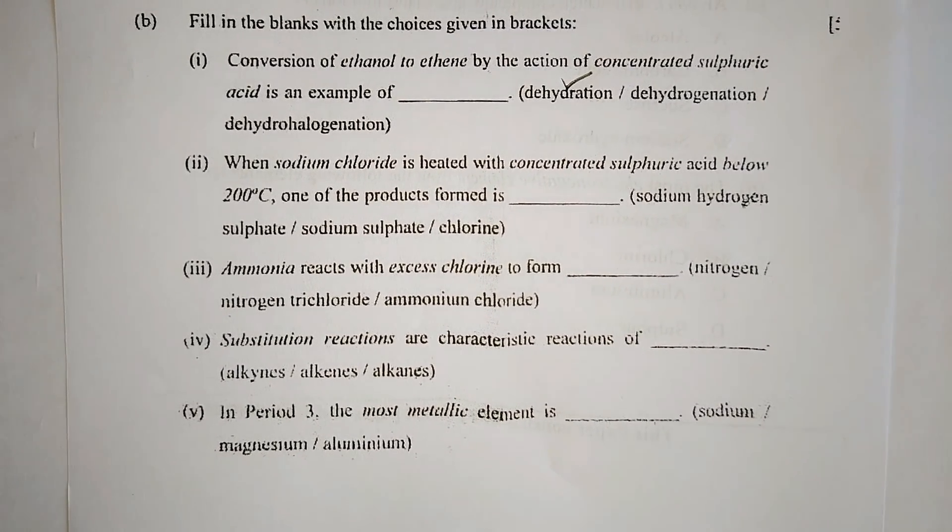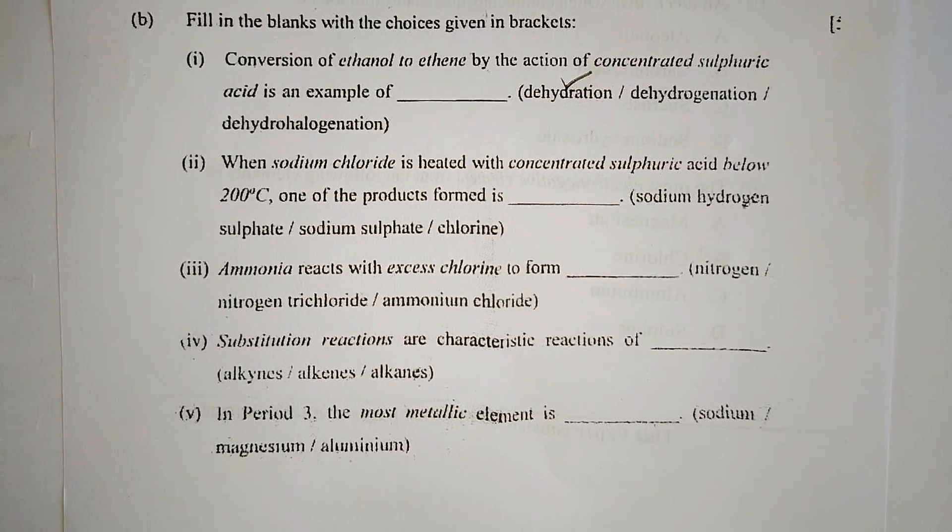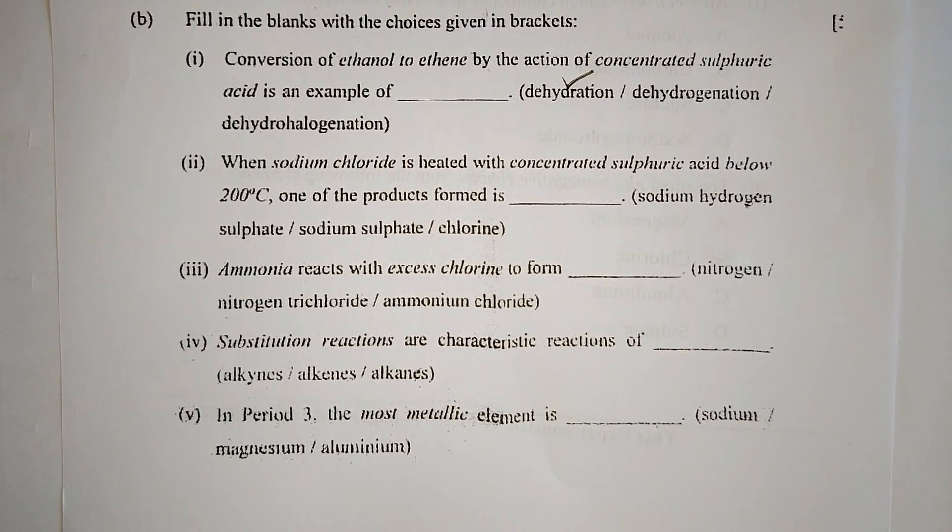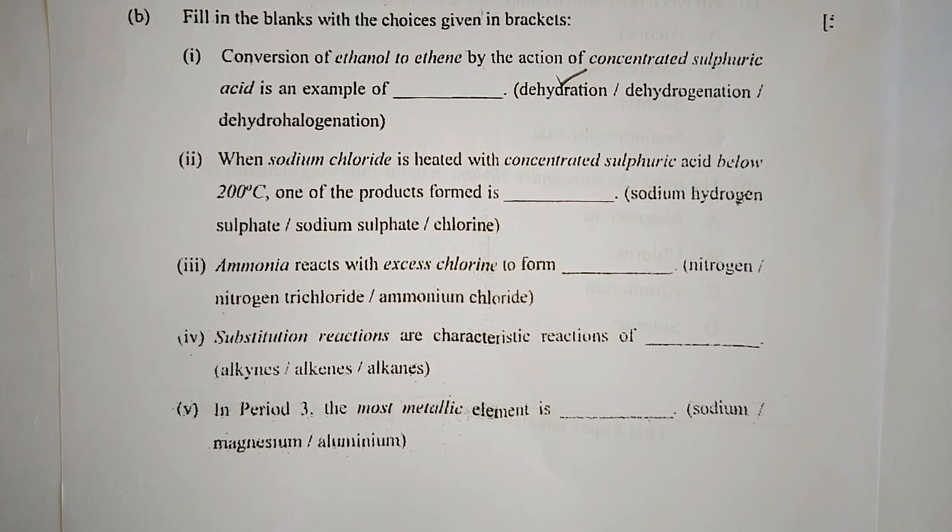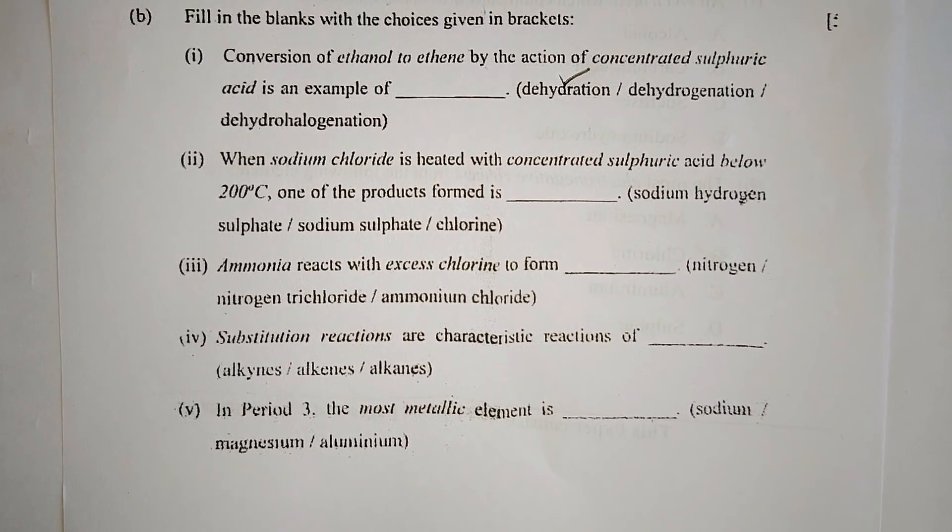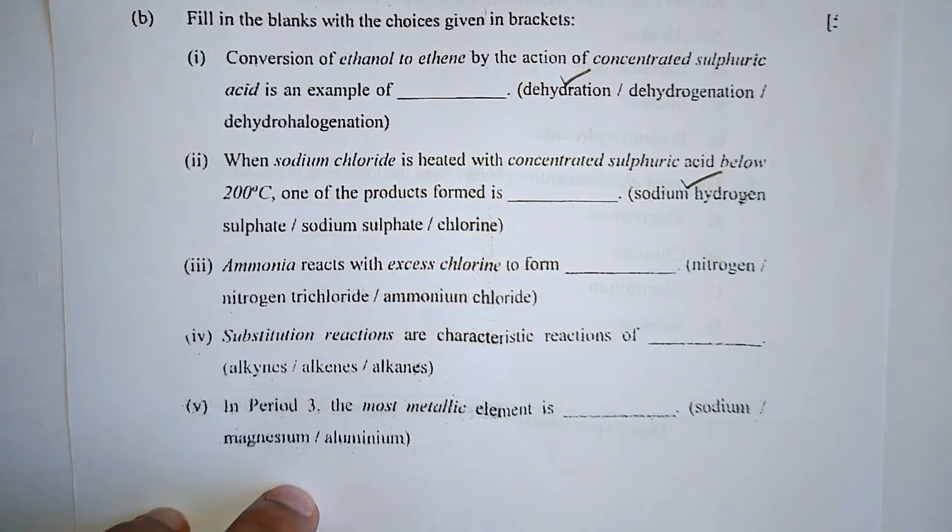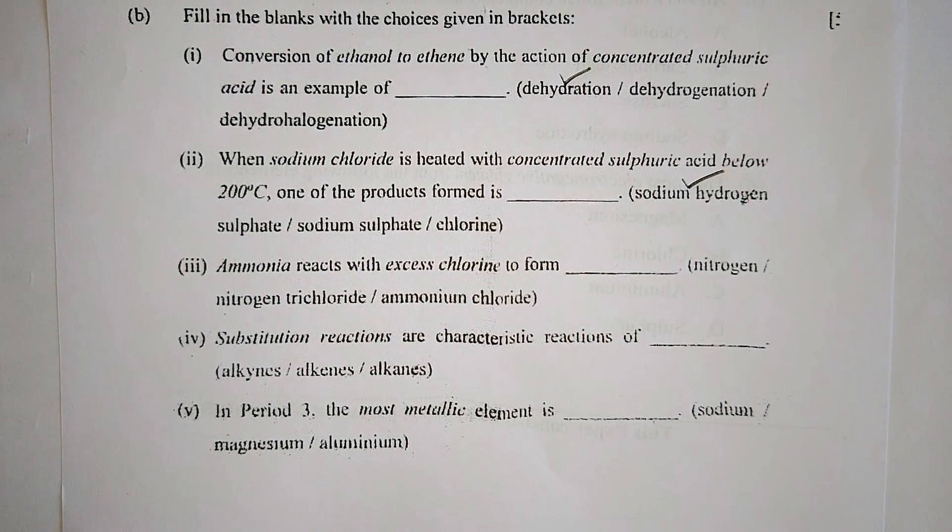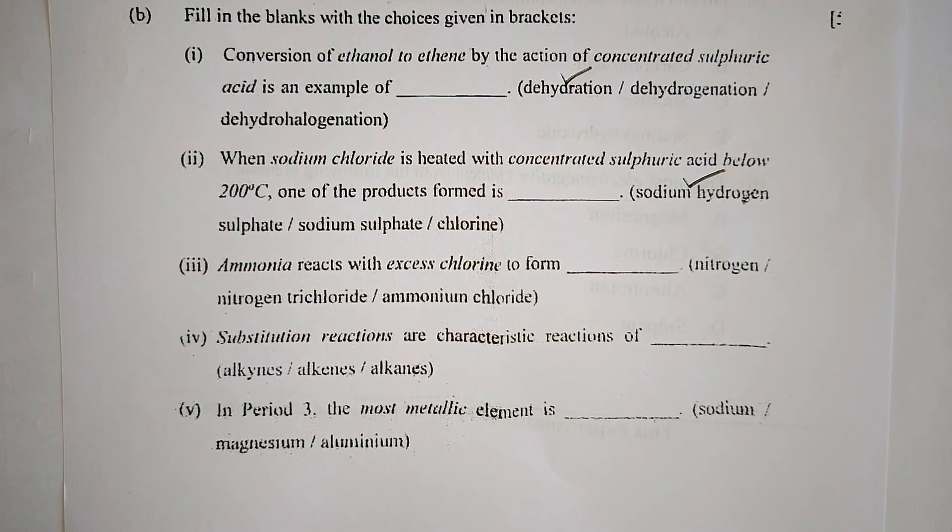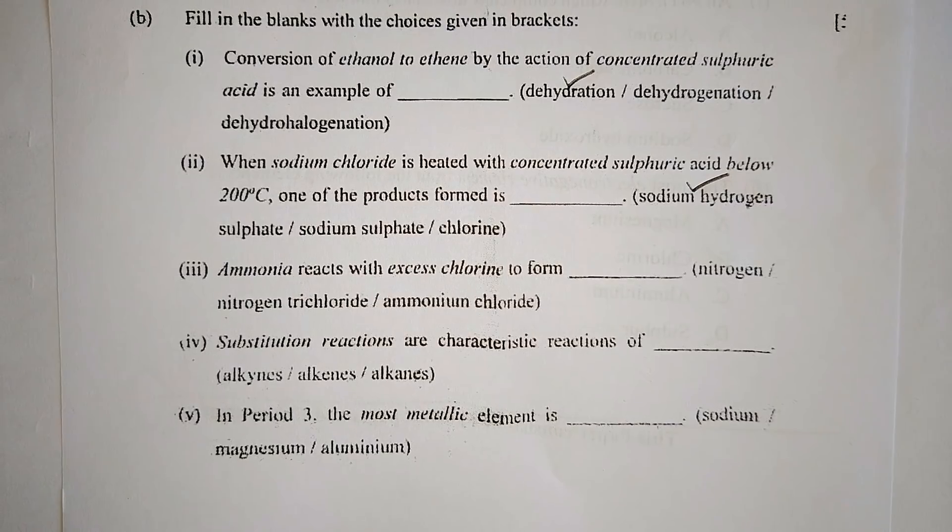Part two: When sodium chloride is heated with concentrated sulfuric acid below 200 degrees centigrade, one of the products formed is sodium hydrogen sulfate, sodium sulfate, or chlorine. The correct answer is sodium hydrogen sulfate.